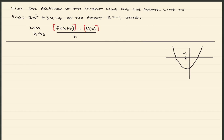When x is equal to negative 1, that gives me a point down approximately right here. Here's point x equals negative 1. I'm going to draw a tangent line. The tangent line would look something like this right here. So what I've got is a formula that looks like this: y is equal to mx plus b. So here are the things I need to know — the point it goes through, the slope, and the y-intercept.